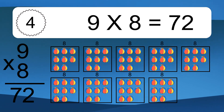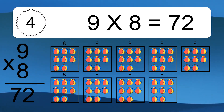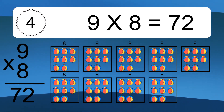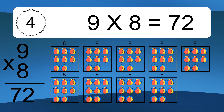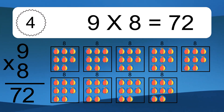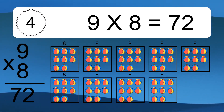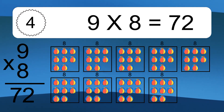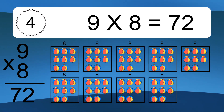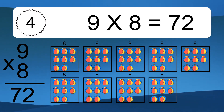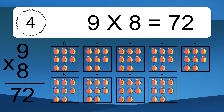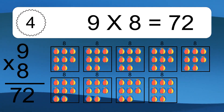9 times 8 equals what? We have 9 boxes and each box has 8 colorful balls inside. If you count all the balls in all the boxes together, you will have 9 times 8 balls. This equals 72 balls.